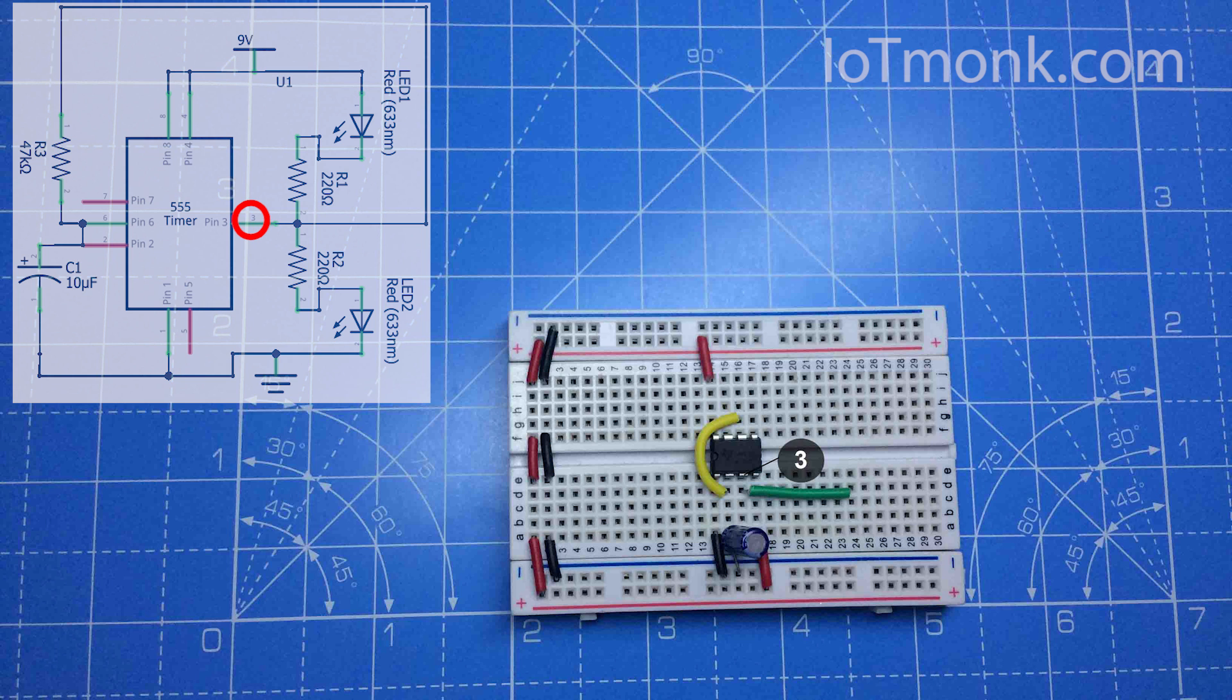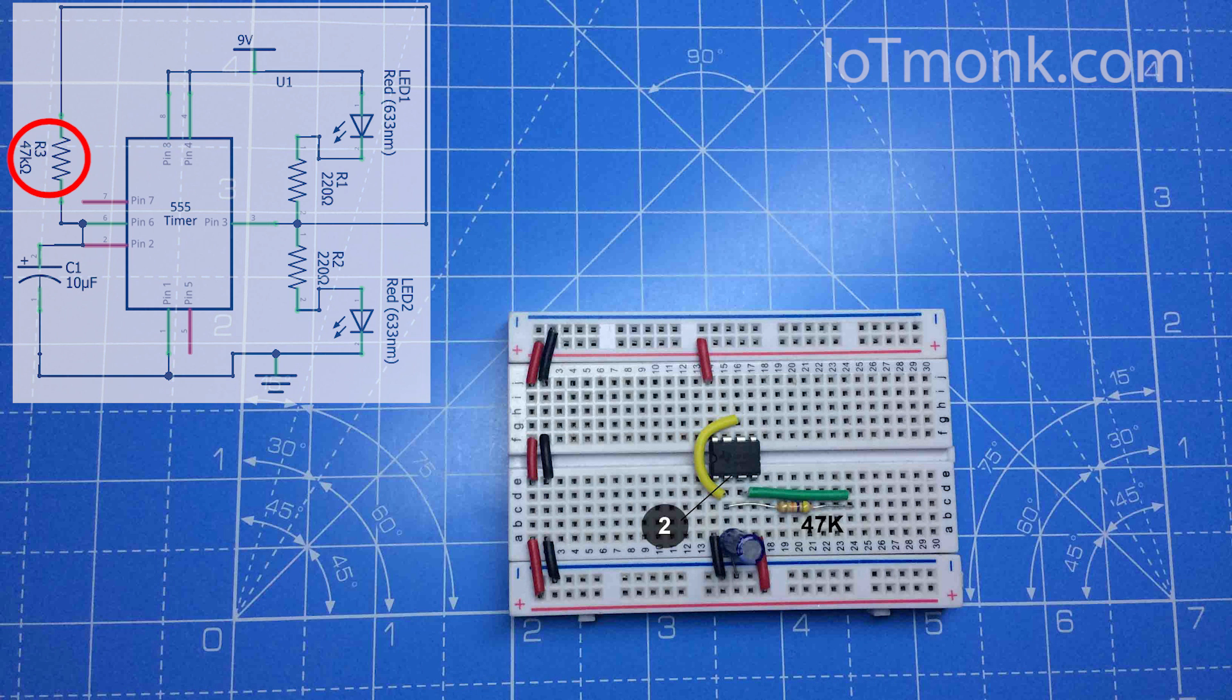Take a 47k resistor and connect it to pin number two. The other end should be connected to this wire which is connected to pin number three, so the resistor is placed between pin number two and three. We are not placing it directly because we don't want a messy circuit.